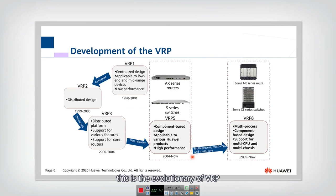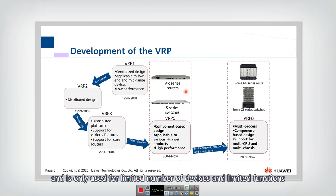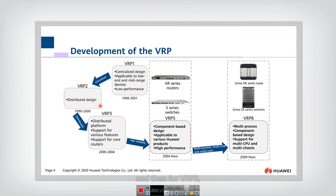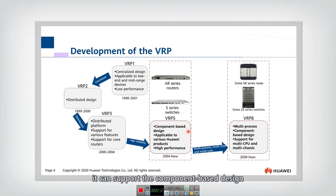This is the evolutionary history of VRP. VRP-1 was first developed 20 years ago. At that time, it was a centralized design and only used for a limited number of devices and limited functions. Then VRP-2 became a distributed design. For VRP-3, it became a platform which can support a lot of various features. For VRP-5, it supports component-based design and a lot of different devices.